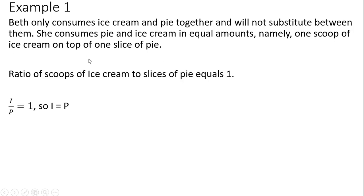In that case, if we were to solve this equation, I equals P, and that's what we're going to basically be putting in our perfect complements utility function. The utility equals the minimum of these two numbers, and based on our ratio, we saw I equals P, so we're going to have I comma P.